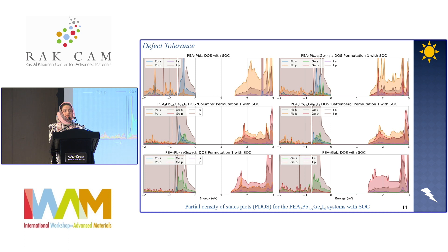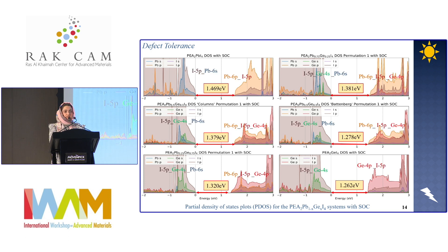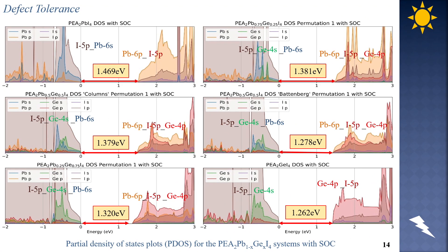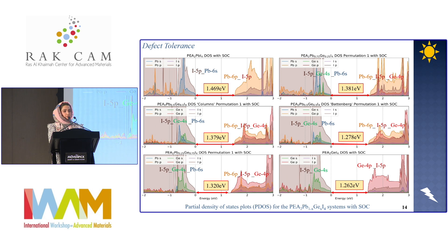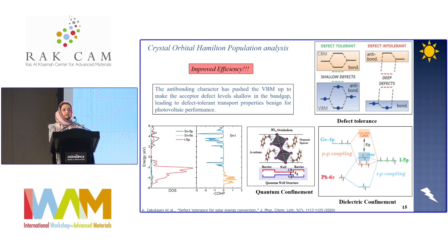I also studied the density of states plot, which clearly shows that all of these structures are defect-tolerant — they remain semiconductors with a small band gap. With germanium, although the band gap is reduced, no deep states occur inside the band gap. We can see anionic dominance at the valence band and cationic dominance at the conduction band. These structures show defect tolerance, quantum confinement, and dielectric confinement. By studying the crystal orbital Hamiltonian population (COHP) analysis, we found anti-bonding valence and conduction bands. With different band gap ranges, designing a tandem solar cell using these structures promises pronounced efficiency.